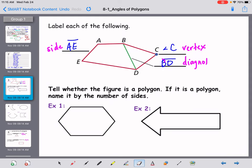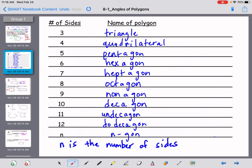Now tell whether the figure is a polygon or not. If it is a polygon, name it by the number of sides. Example one has all straight sides, so yes, this is a polygon. And how many sides does it have? Let me number them: one, two, three, four, five, six. It has six sides. So I'm gonna go back over here to my list and I'm going to go down the column and see that a six-sided figure is called a hexagon.